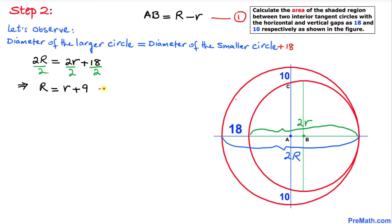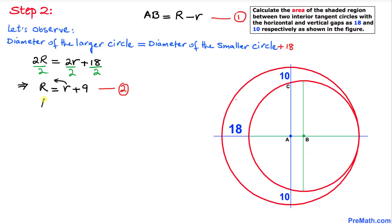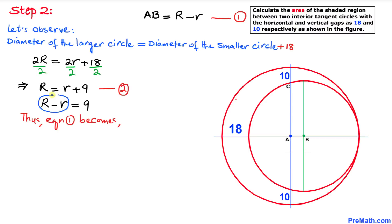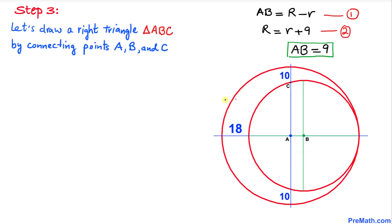From equation two, if we move lowercase r to the left-hand side, we get uppercase R minus lowercase r equals 9. Substituting into equation number one, the distance AB is simply 9.